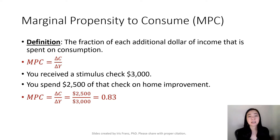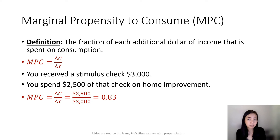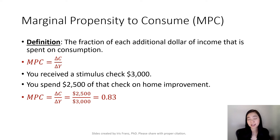For example, if you get a stimulus check in the amount of $3,000 and you spend $2,500 of that check on home improvement and save the rest, then your marginal propensity to consume equals the change in consumption divided by the change in income — which is $2,500 divided by $3,000. That gives you 0.83, which is your marginal propensity to consume.